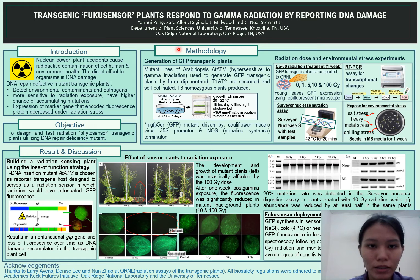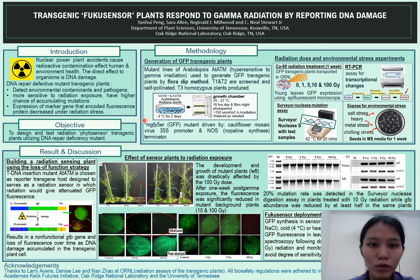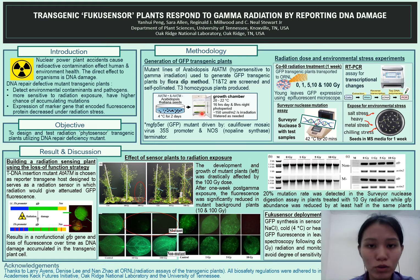The methodology of this article can be separated into two main parts. The first is generation of GFP transgenic plants. Mutants of Arabidopsis ATATM, which are hypersensitive to gamma irradiation, are used to generate GFP transgenic plants by the floral dip method. The mutants are driven by cauliflower mosaic virus 35S promoter and nopaline synthase terminator. Wild type and mutant Arabidopsis are germinated in water and grown in a growth chamber. T1 and T2 are screened and self-pollinated, and the resulting T3 homozygous plants are used for further analysis.